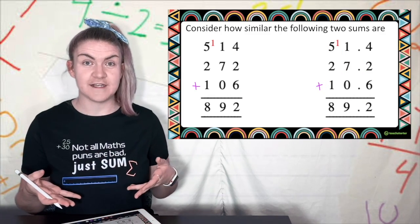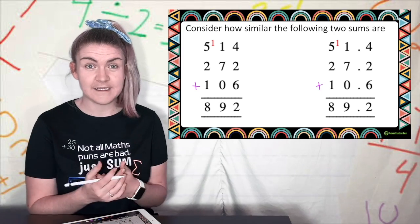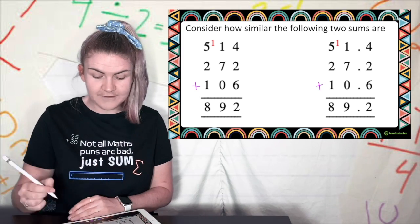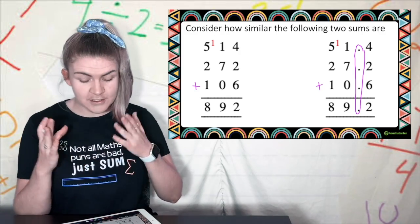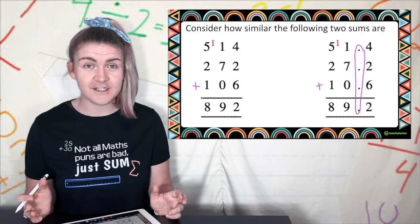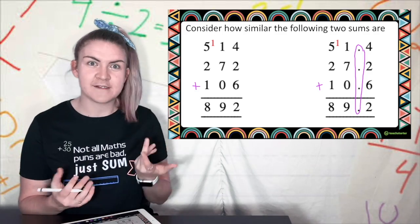Here are two different addition sums. Look they look basically exactly the same. The only difference here is that this has a line of decimals but as you can see they follow the same procedure it's all lined up. So nothing changes with decimals except that there's a line of decimals.